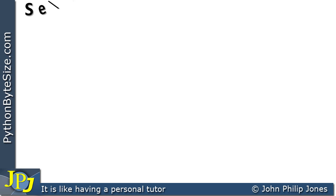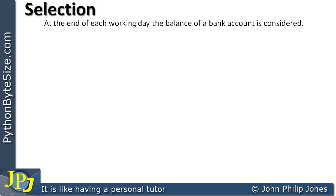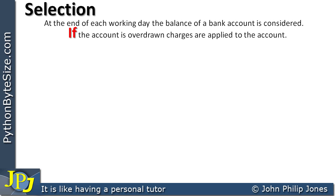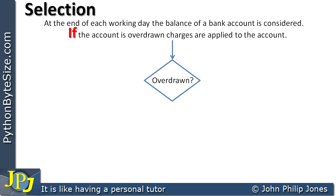In this video we're going to have a look at the selection construct for the Python language, using this example: at the end of each working day the balance of a bank account is considered. If the individual has drawn out too much money — in other words if the account is overdrawn — charges are applied. So we need to ask: are you overdrawn? If the answer is no, you carry on with the rest of the program. If yes, you apply the charges.